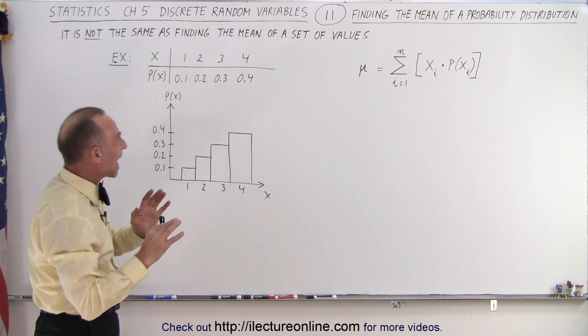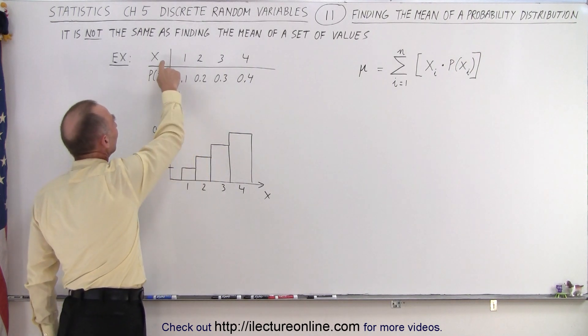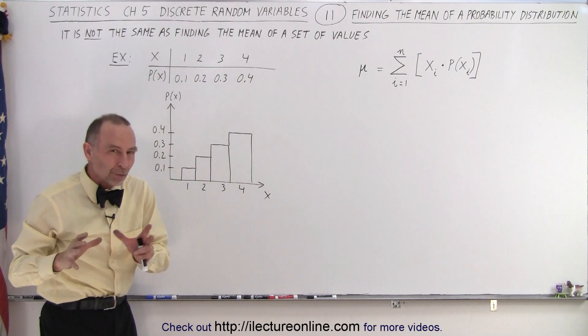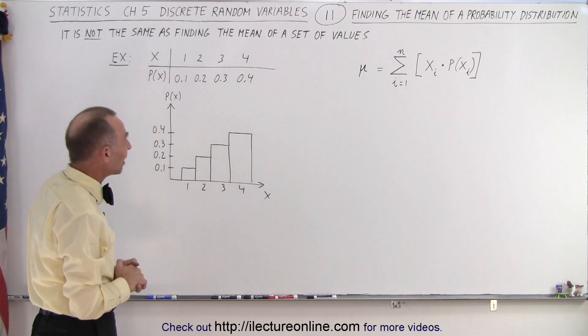So notice that if we take the average value of what our variable can be, 1, 2, 3, or 4, that the average value or the mean of those values is 2.5.